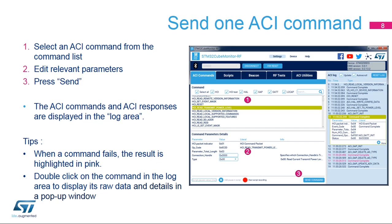It is possible to use the search filter to query the command list and to filter commands by category. There are three steps to send a command: select the command from the list — filters and search parameters can be used to quickly find commands; enter the correct command parameters; then click Send Command. The log is updated with the sent command and the result returned by the device. Click the log area to display packet details; more details are available using the plus button.